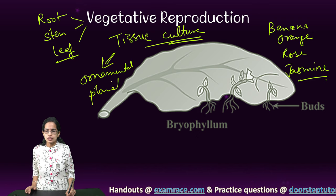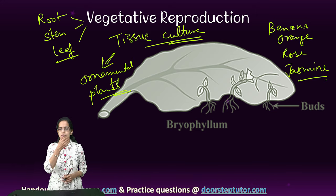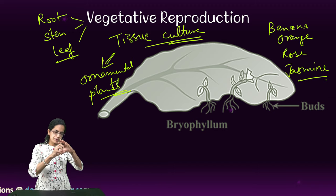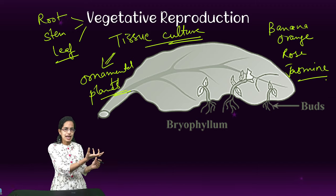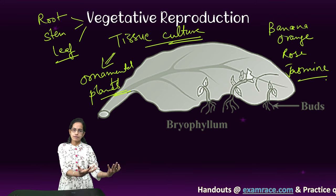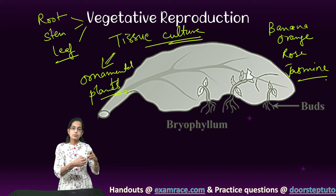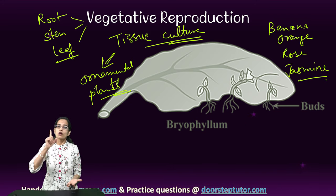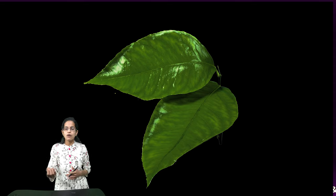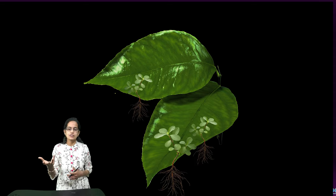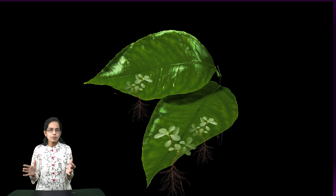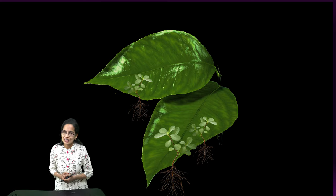So we have two important processes: vegetative reproduction, with examples covered, and tissue culture — where tissue is separated, multiplies rapidly as callus, and further multiplies to form a new plant in an artificial medium through differentiation, commonly seen in ornamental plants. We also have a demonstration showing how vegetative reproduction takes place on the leaves in the case of Bryophyllum — new plants originating from the leaves itself. We would be covering many more interesting concepts in science. Stay tuned, and have a wonderful day.